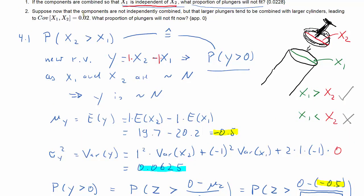So what about the second question? Here, we're being told that the combination of the components is such that actually there's some positive covariance, covariance of 0.02. How does that change our analysis? Now, we'll keep the same setup of our random variable Y, and the expected value of that is still going to be negative 0.5 and is unchanged.